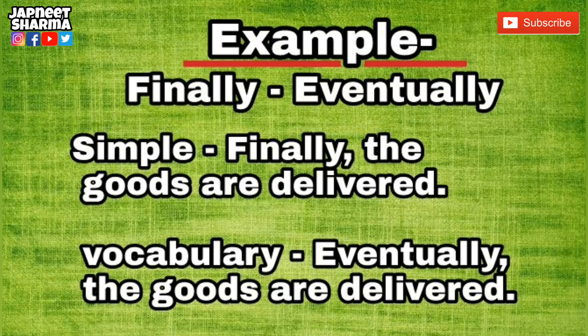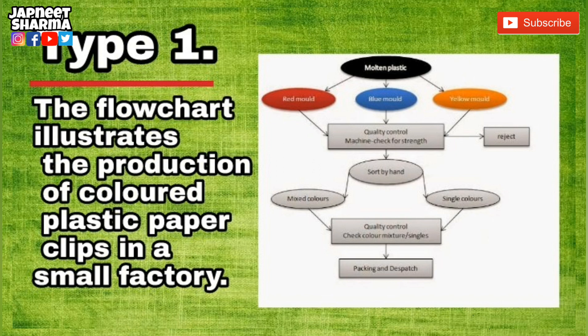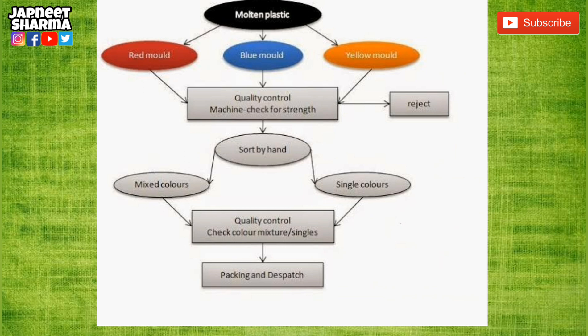Now let's move to the first type of flowchart. The flowchart illustrates the production of colored plastic paper clips in a small factory. The first, or ab initio, step is melting the plastic. Next, the molten plastic is poured into three different kinds of molds — red, blue, and yellow molds. After the clips are shaped, they are sent to the quality control machine for checking their strength, to see whether they are durable or not. If they are not durable, they are rejected. If they pass the test, they are sent to the next step — that is separating — where they are sorted by hand into two categories: mixed color and single colors.